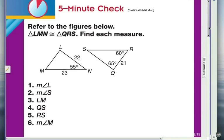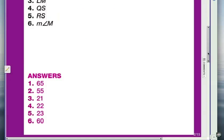Alright, let's take a look at the answers. We'll do a quick answer check here. Number 1 is 65, 2 is 55, 3 is 21, 4 is 22, 5 is 23, and 6 is 60. Now, let's go back and take a look and let me explain.